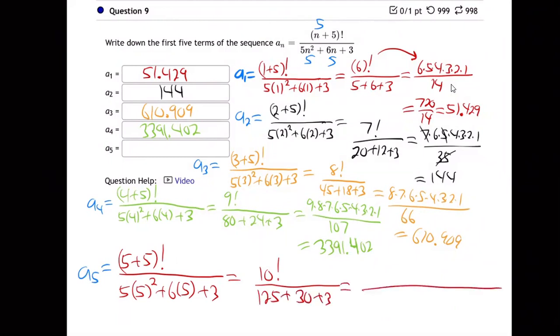...and that is 10 factorial, so 10 times 9 times 8 times 7 times 6 times 5 times 4 times 3 times 2 times 1, over 158. Okay, and then hit the buttons on your calculator.